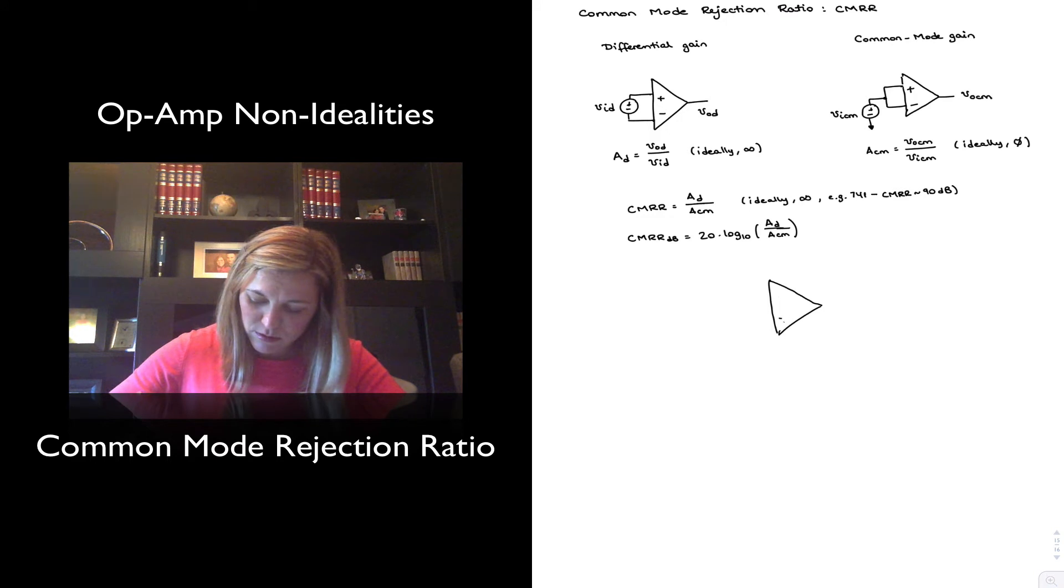So I'm actually going to keep the same convention as above and just put the plus at the top. Typically we will represent the common mode signal, VICM, and the differential signal. Normally, half of it gets apportioned to one input terminal and the other half to the other input terminal. So this will be VAD divided by 2, and this will be VAD divided by 2 but with the opposite polarity.